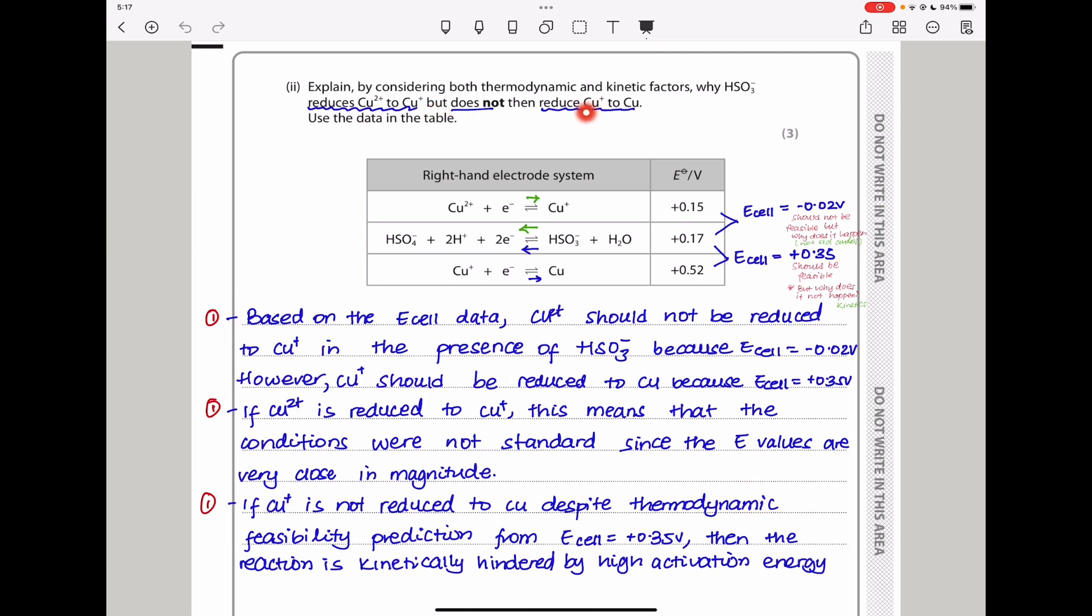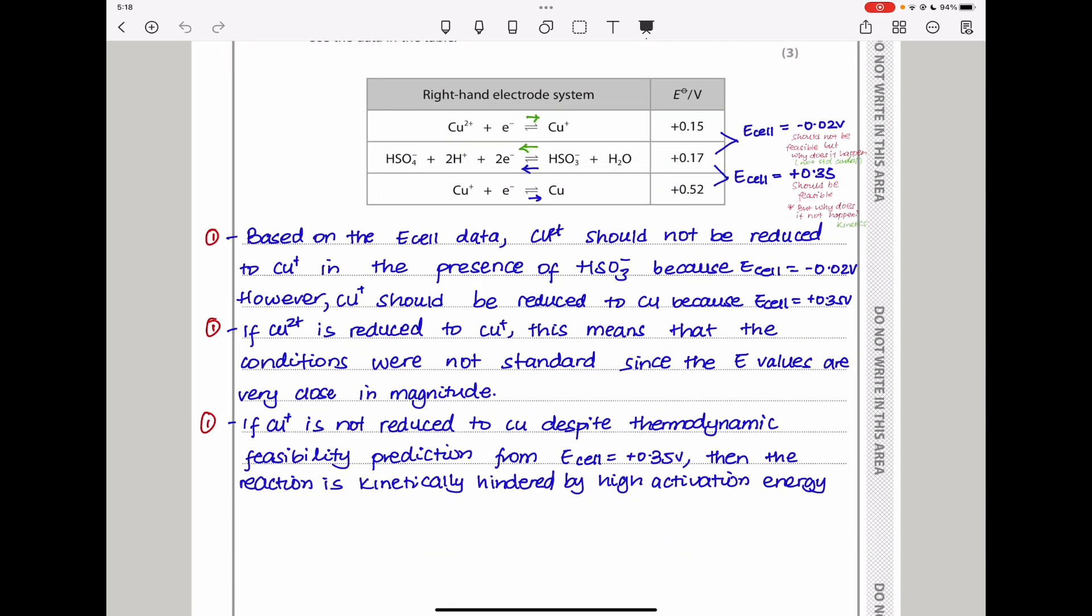The next part they say, this reaction did not occur. To convert copper(I) to copper, that reaction has a higher positive in comparison to the other one, meaning this reaction should be feasible. When we look at the E cell, it's positive 0.35 volts. That is feasible because it's positive. Now, if this reaction is supposed to be feasible, why would it not happen? It means it has a higher activation energy that has to be considered in order for the reaction to be successful.